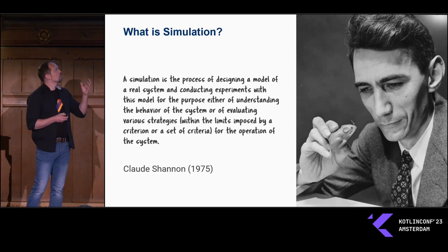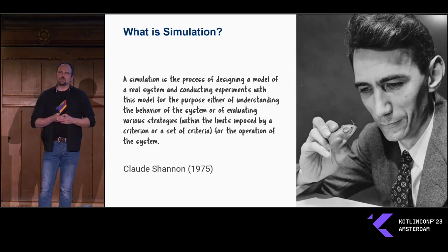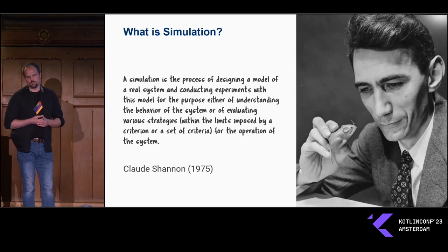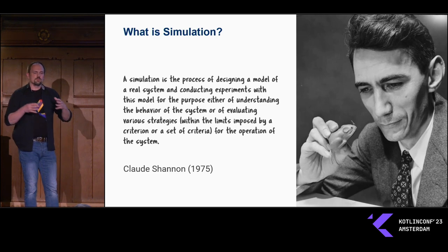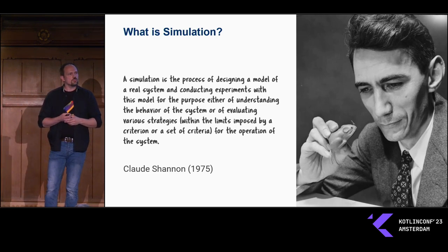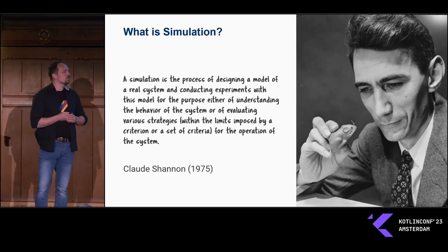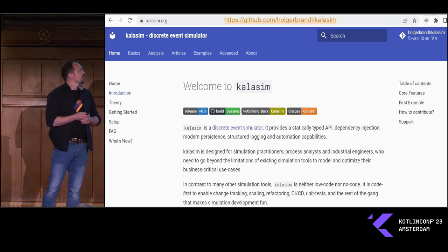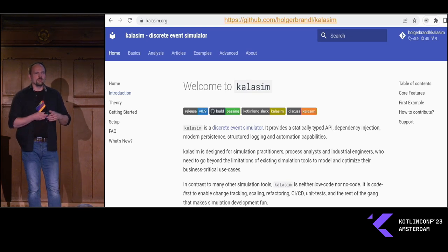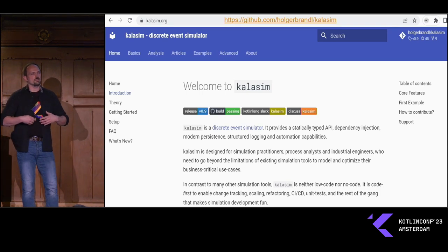There are a couple of elements in Shannon's definition. First, there's the level of abstraction — we cannot reflect all details of reality; we have to cut down the bits and pieces irrelevant for the dynamics of the system. Then why do we do it? For two types of insights: first, we want to understand the behavior; and second, we want to explore strategies to steer or govern the process more efficiently. In order to bring this idea to life, I have created a library you can find on GitHub — an MIT licensed project which allows building simulation models with Kotlin.